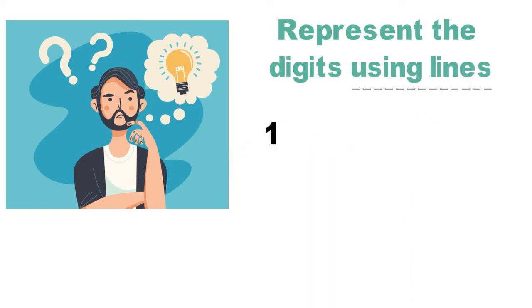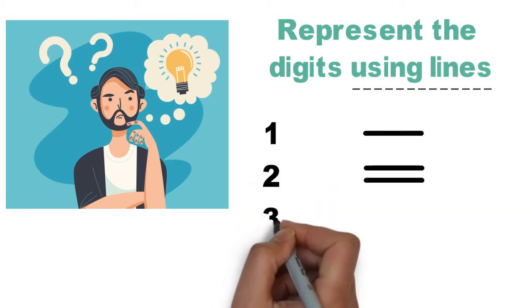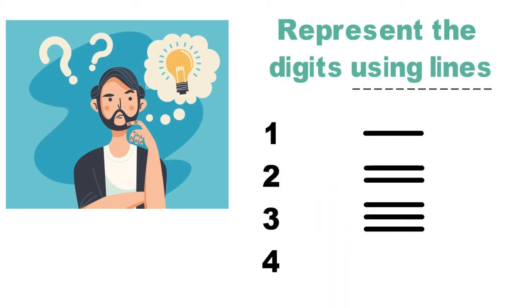The digit 1 will be represented using one line. The digit 2 using two lines. Digit 3 using three lines and so on. Let's take a few examples.